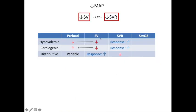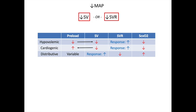Adding this to the table: in hypovolemic and cardiogenic shock, cardiac output is low, blood moves slowly, so central venous sat is low. In distributive shock, you tend to have a hyperdynamic state, circulating everything quickly, so central venous sat tends to be high.